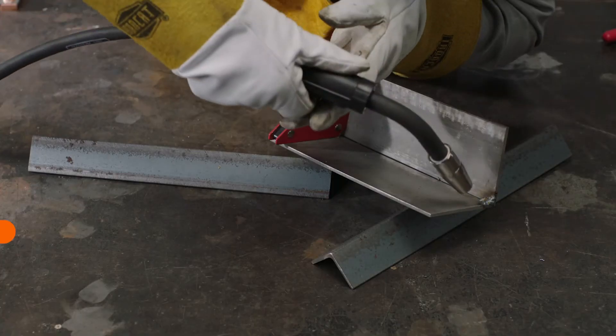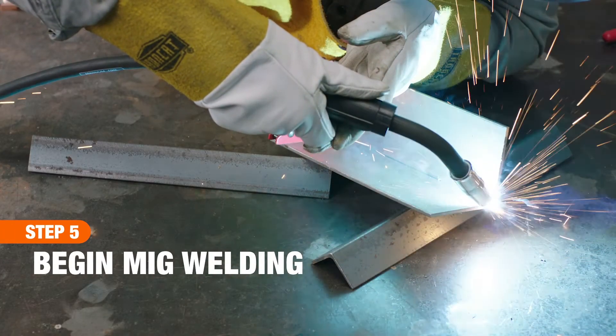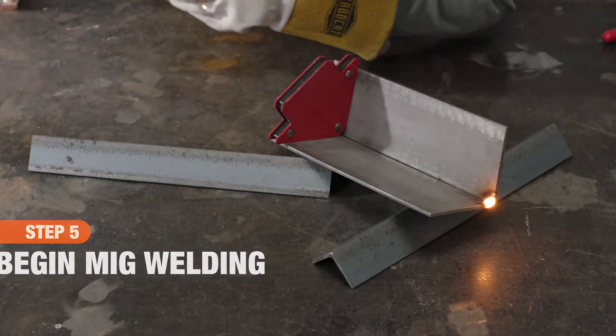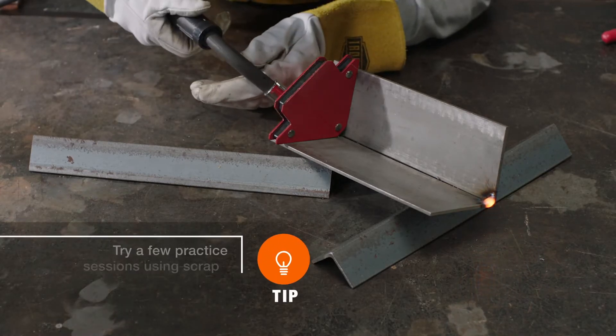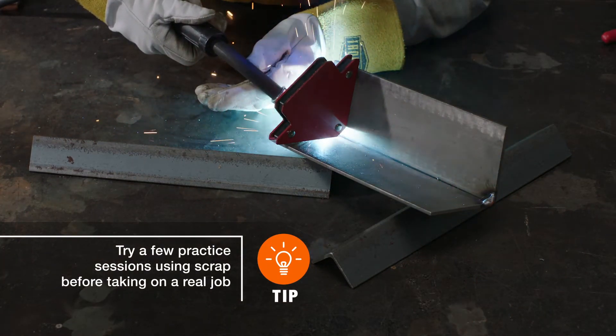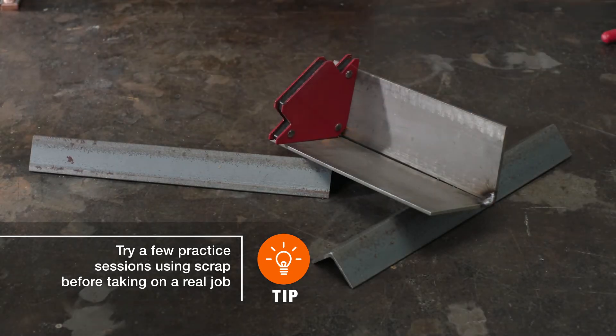First, place your base metal on angle irons to lift it for easy access and to create a dip for solder to fall into, ensuring complete fusion. To keep your base metal from moving, start by tacking it together. Use your welding corner magnets to secure your base metal in a 90-degree position, then tack each end.